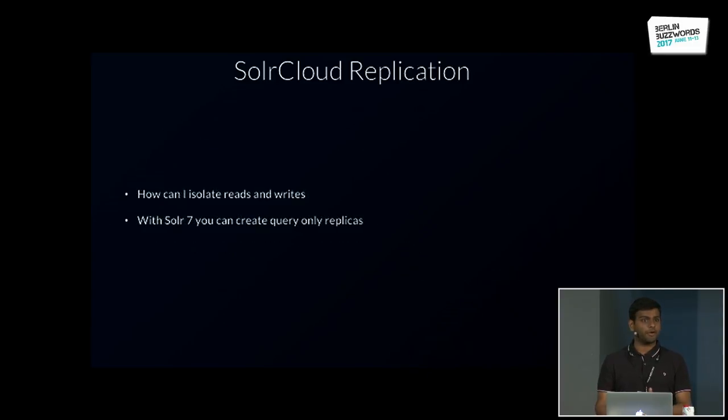With Solr 7.0, coming out in a couple of months, we added more replication modes. We brought back a pull model for use cases where you don't need near-real-time search, or where you want to separate reads from writes. You can create a new type of replica that only pulls from the leader rather than having documents forwarded to it, isolating reads from writes. These replication modes will be in 7.0, with talks and blogs coming in the following weeks.